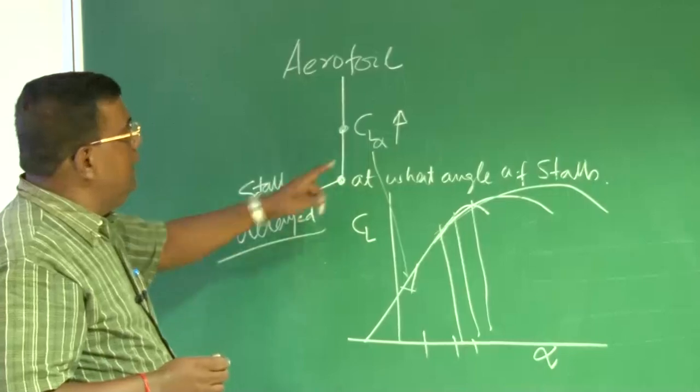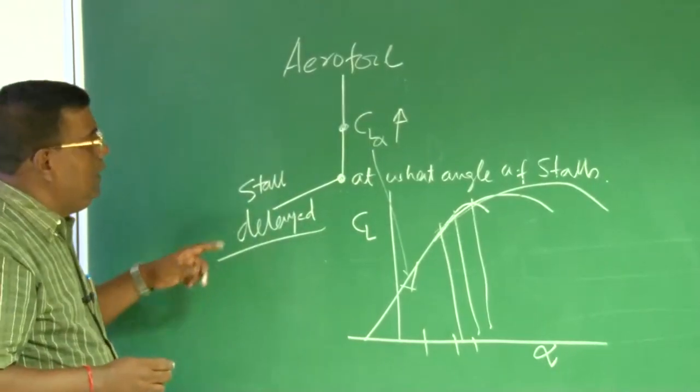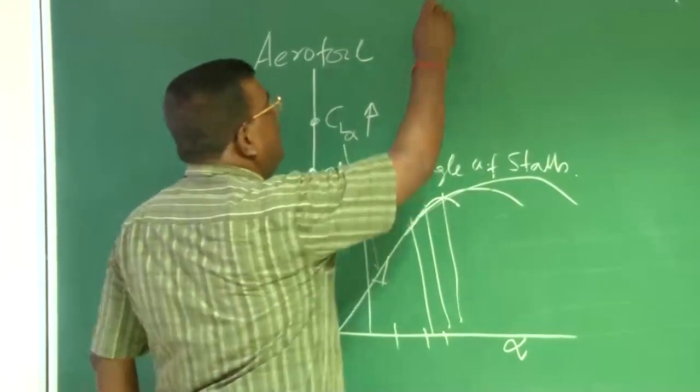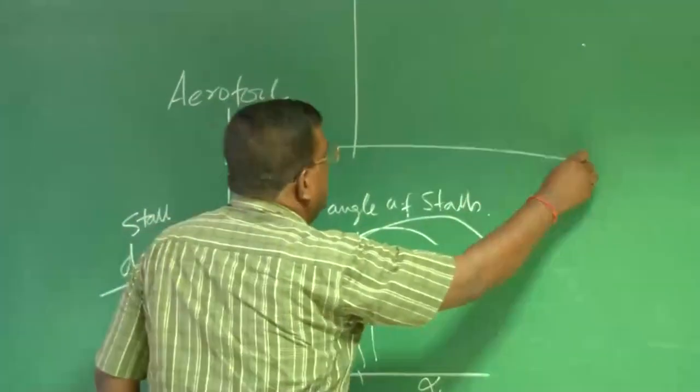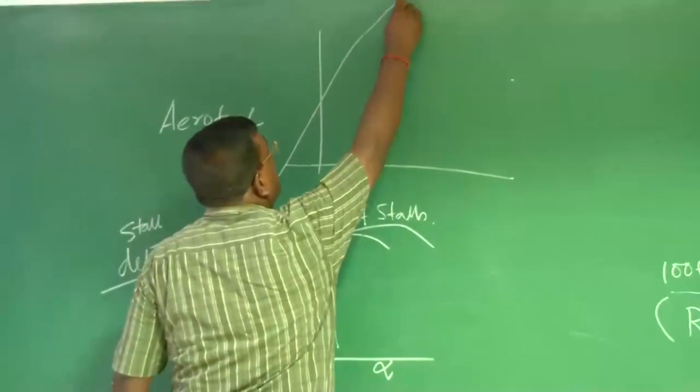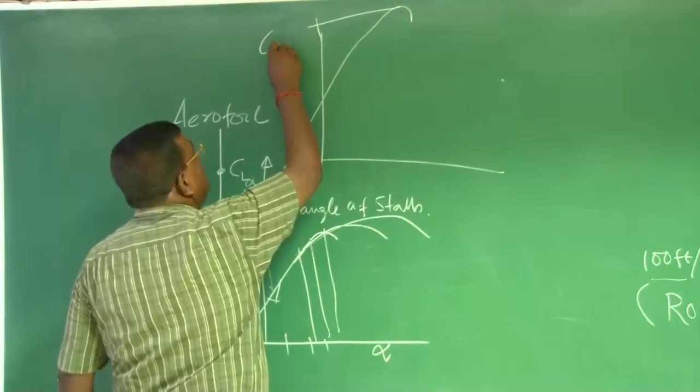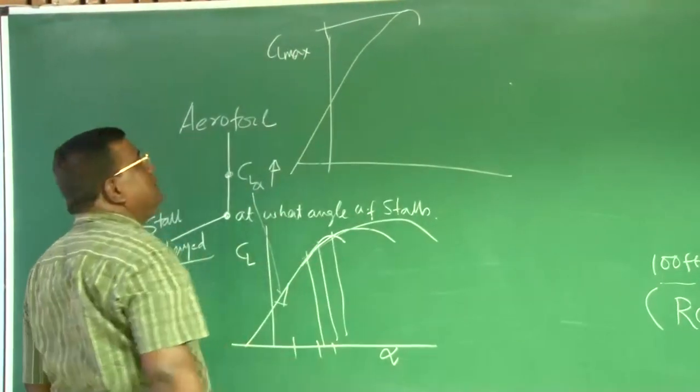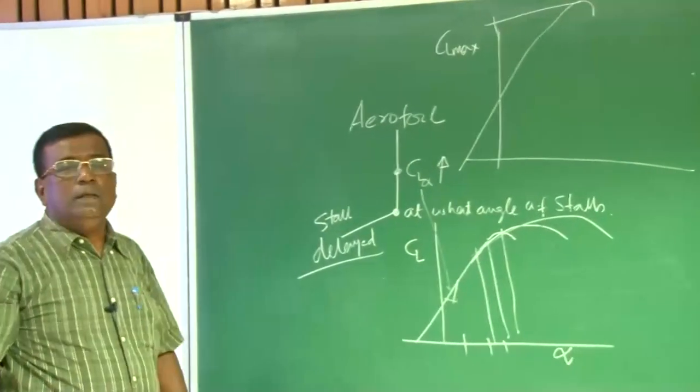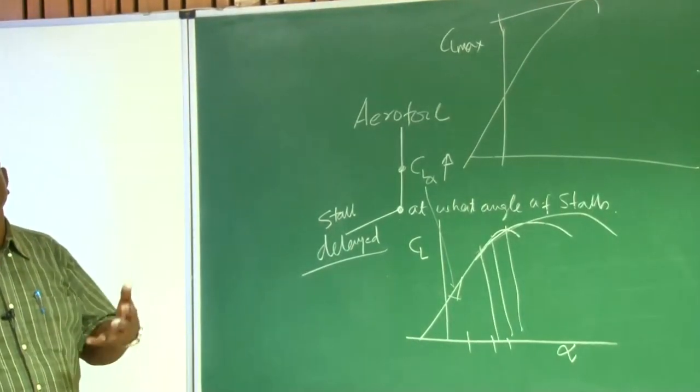So, this is CL alpha, stall delayed, and when I say CL alpha, you could see here, a designer also would look for a good value of CL max. He wants CL max should be as high as possible.